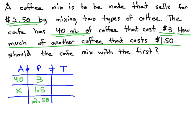As a quick check to make sure we're right, the bottom price should be between the other two prices. 2.50 is somewhere between 1.5 and 3, so I know I've got this set up right.